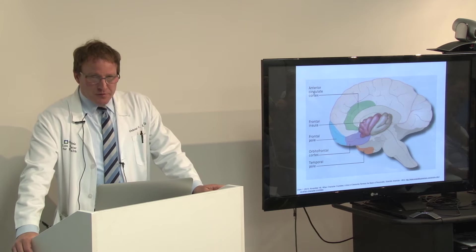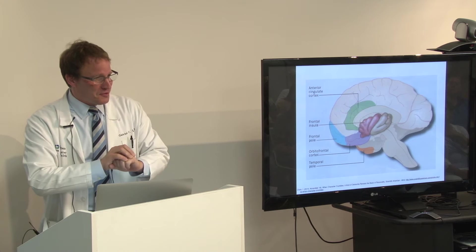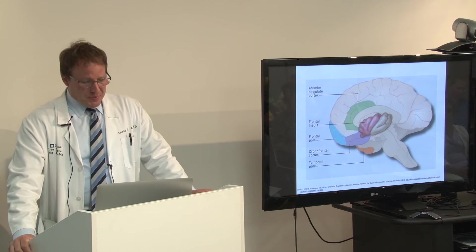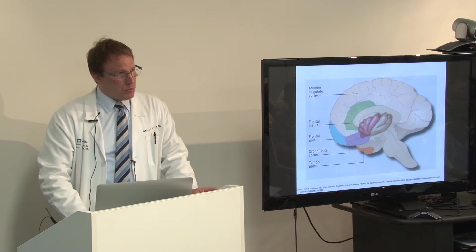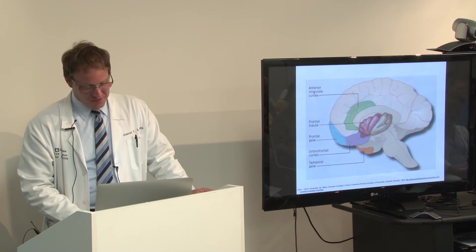The parts of the brain most involved in behavior and emotional processing are the frontal part of the brain, the tip of the temporal lobe, and another area called the insula cortex, which is buried deep inside the brain. These are areas that control our emotional behavior. It turns out that these are the parts affected in frontotemporal dementia, but they're also affected in Alzheimer's disease, stroke, and Lewy body disease.